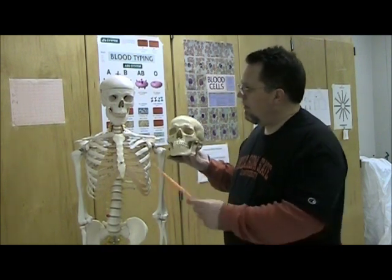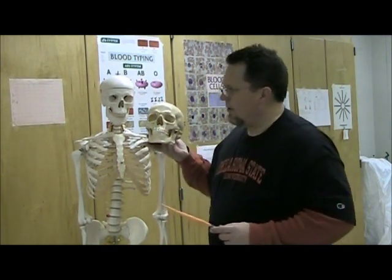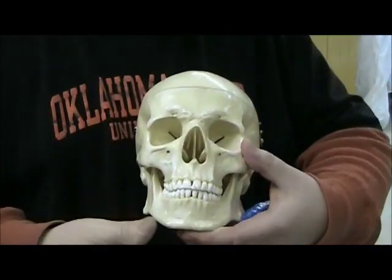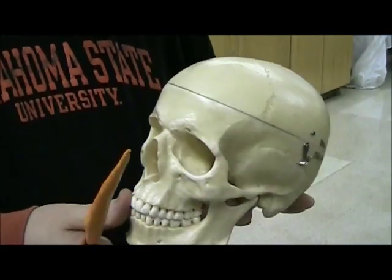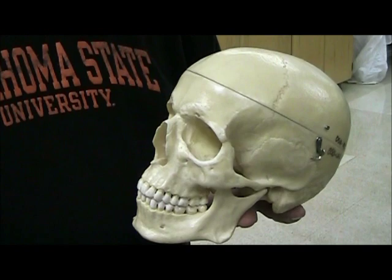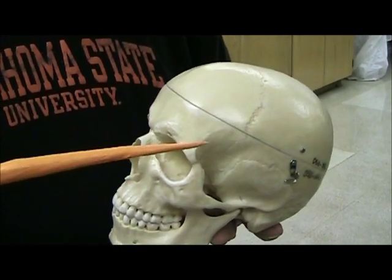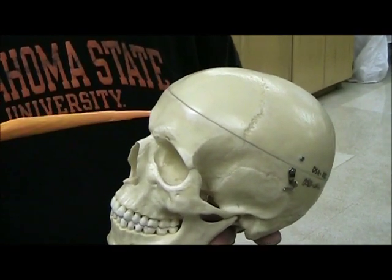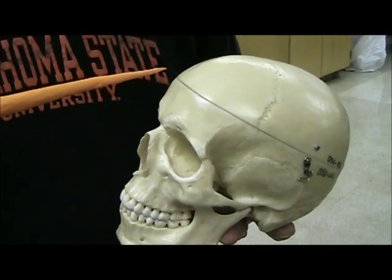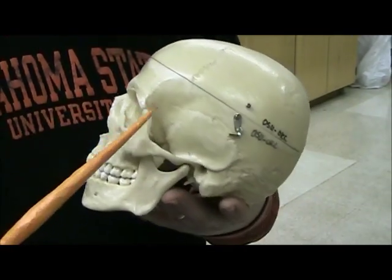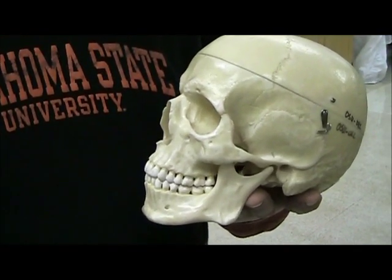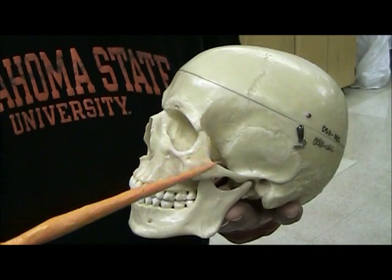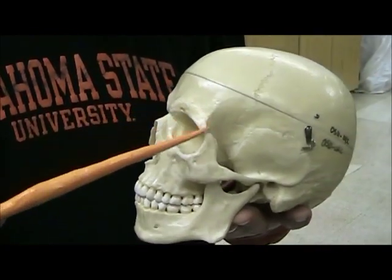We're going to do a closer inspection of a skull. We're going to cover the divisions of our skull, which includes cranial bones — the bones of the brain case — and the bones of the facial region. A lot of times when we think of someone's face, the features come from these facial bones.